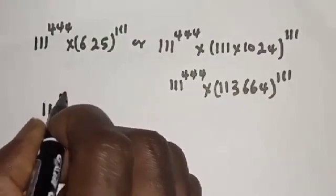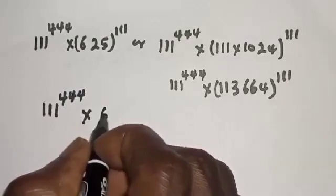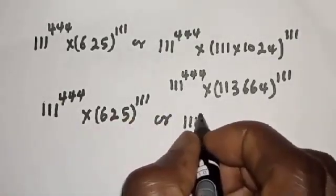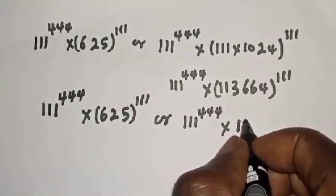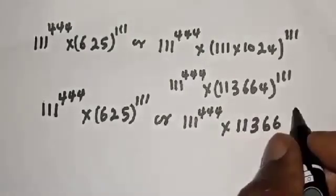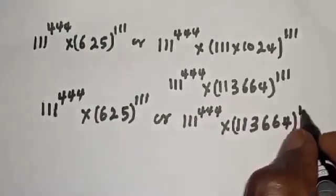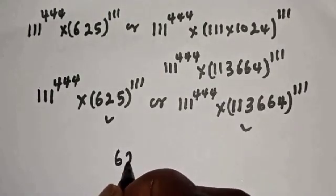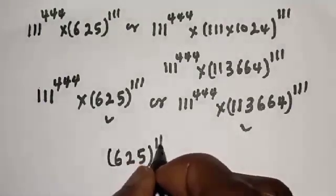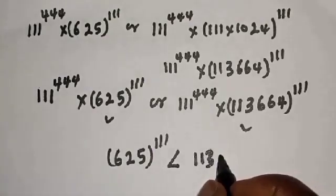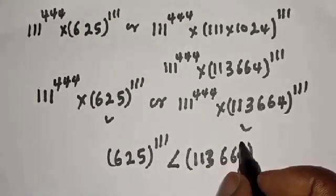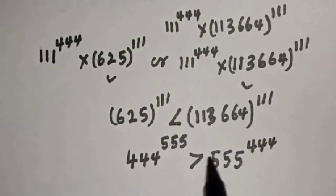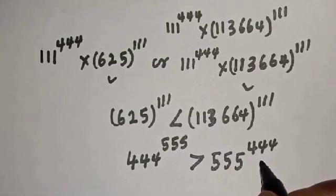So we have 111 to power 444, multiplied by 625 to power 111, versus 111 to power 444, multiplied by 1024 raised to power 111. From here, we compare: 625 raised to power 111 is less than 1024 raised to power 111. Therefore, 444 raised to power 555 is greater than 555 raised to power 444, and this is the conclusion.